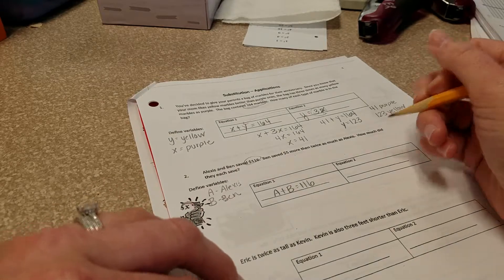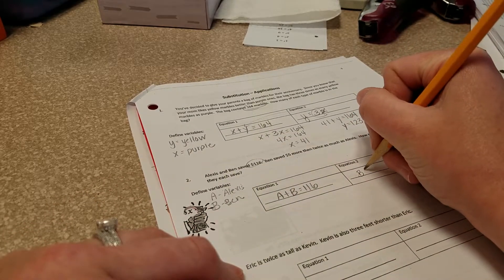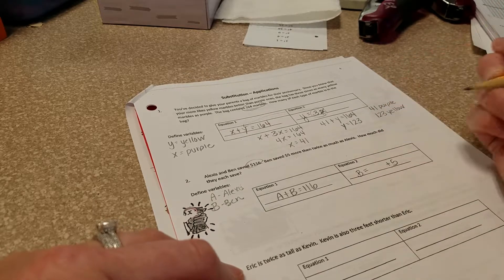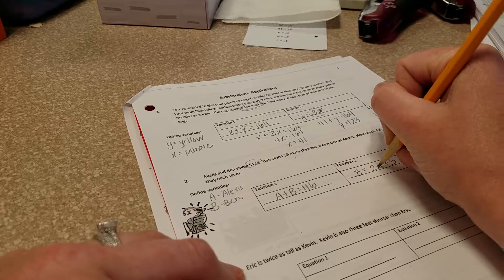Ben saved $5 more than twice as much as Alexis. So Ben is equal to $5 more, so plus 5, than 2 times Alexis.